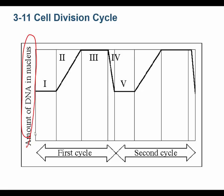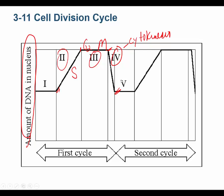This cell division cycle graph shows the amount of DNA in the nucleus over time. At point two, the DNA is increasing — this must be the S phase of interphase. Point three is G2 and M. Point four is cytokinesis — how do I know? The DNA per nucleus is decreasing, and DNA per nucleus decreases during cytokinesis. What comes before S phase? G1. What comes after cytokinesis? G1. So the sequence is S, G2, M, cytokinesis — and this represents a complete cell division cycle. You can see the first cycle and the second cycle.